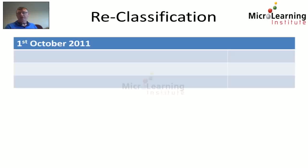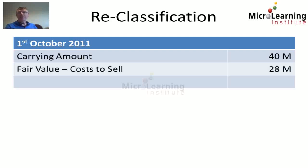From IFRS 5, when we reclassify a cash generating unit to held for sale, we remeasure it to the lower of two valuations: firstly, the carrying amount — in this question the carrying amount prior to reclassification was 40 million dollars — and the fair value less cost to sell, which in this question was 28 million dollars at the date of reclassification.